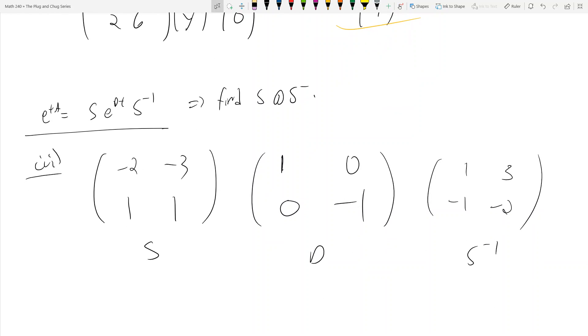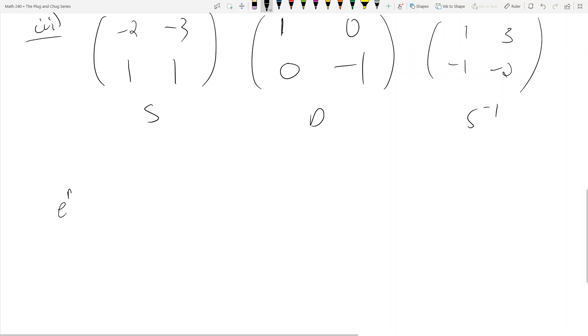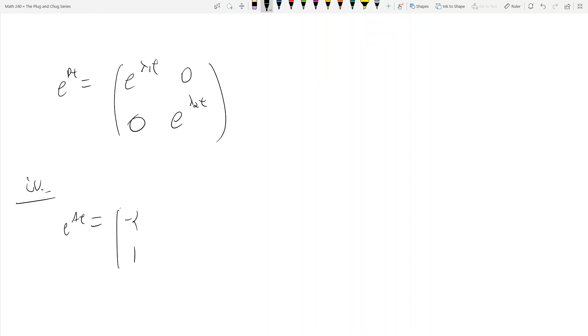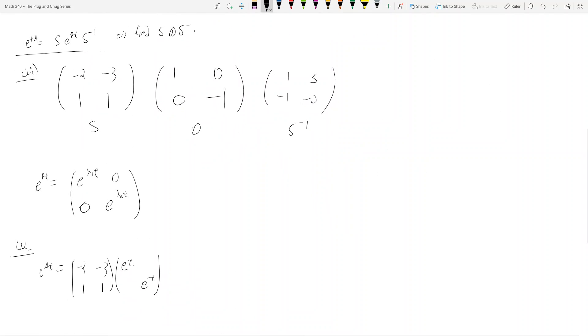So here's SDS inverse, and now what the heck is e to the Dt? Well, the idea is this: e to the Dt equals (e^(λ₁t), 0; 0, e^(λ₂t)). It's very simple. You just take e and raise it to whatever power is in your middle matrix. So step 4, we see that e to the At equals S times (e^t, 0; 0, e^(-t)) - because D was (1, 0; 0, -1), so we get e^t and e^(-t) - times S inverse which is (1, 3; -1, -2). And now here comes the part that's the big pain in the ass.